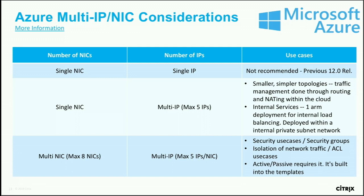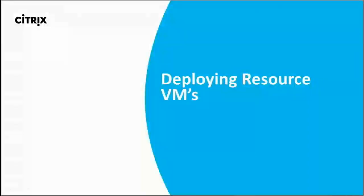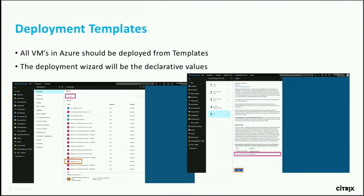In terms of IP considerations, you can put a single NIC with a single IP for your entire deployment, or do multiple ones. Just keep in mind the Azure restriction of a maximum of five IP addresses per NIC. Deploying NetScaler in the portal is as easy as searching for 'NetScaler 12.0 HA' in the marketplace.